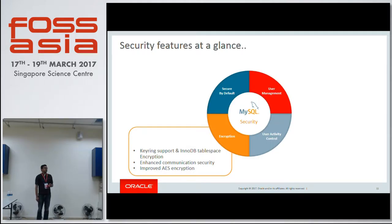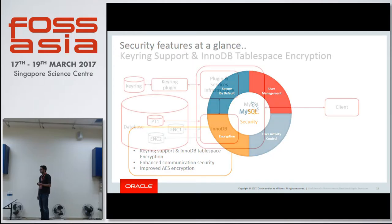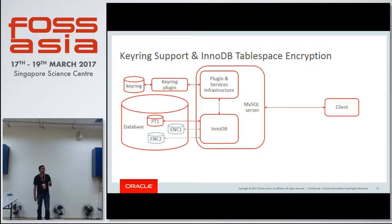For encryption and communication security, 5.7 comes prepared with keyring support. This is in terms of a plugin and InnoDB tablespace encryption. We have enhanced communication security, support for TLS 1.1 and 1.2 as well, and the AES encryption enhancement which was reported in 5.6.2. Inside the server, we have a plugin and services infrastructure which can talk to any keyring backend server. InnoDB, which is part of the server, can communicate with the plugin and services infrastructure to obtain the key and encrypt the tables using the key provided by the keyring.